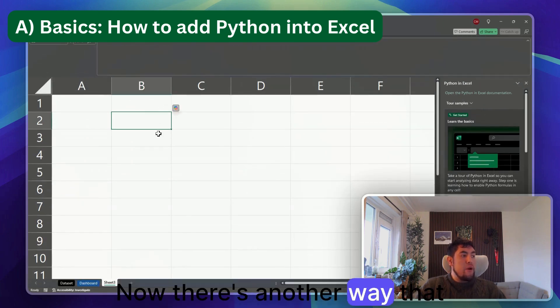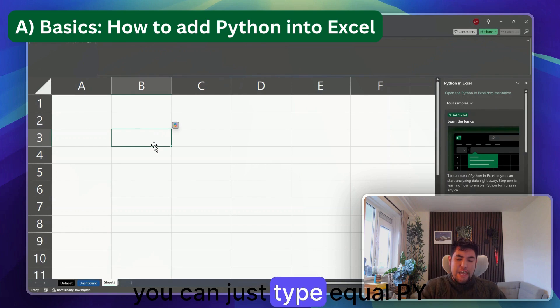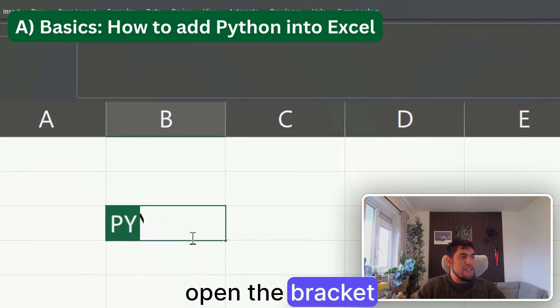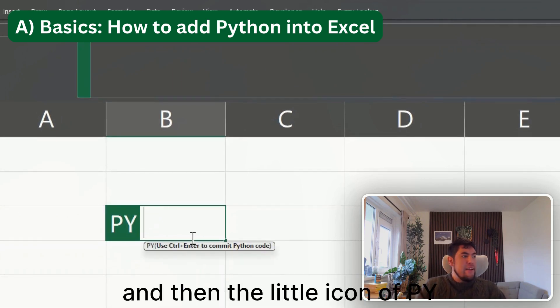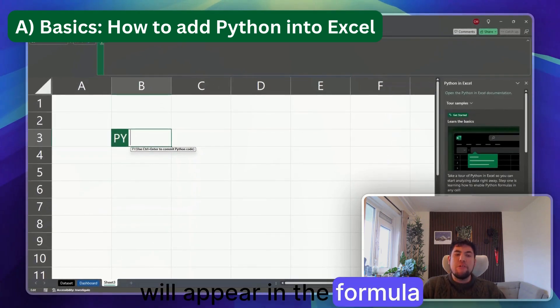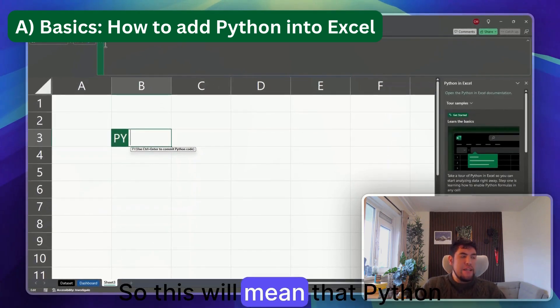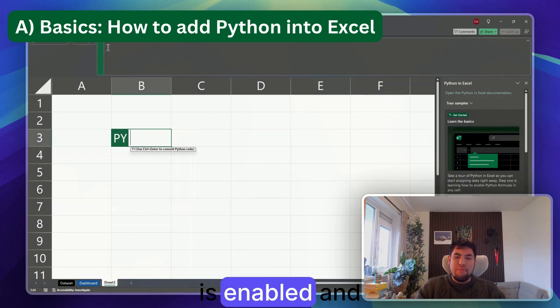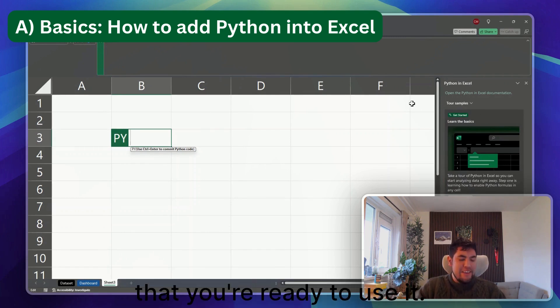This will signal Excel that you are writing Python code in this cell. Now there's another way that you can just type equal PY, open the bracket, and then the little icon of PY will appear in the formula bar. This will mean that Python is enabled and that you're ready to use it.